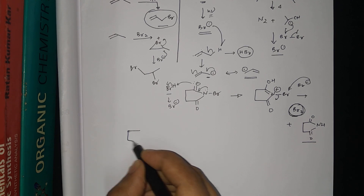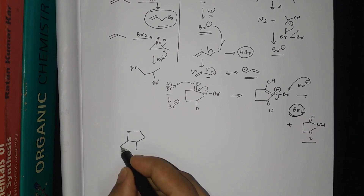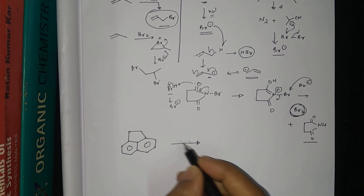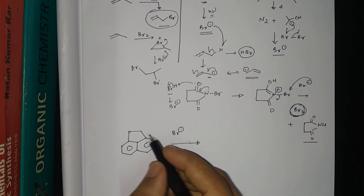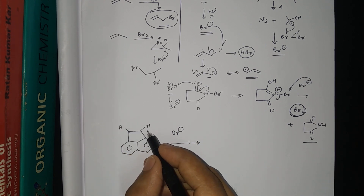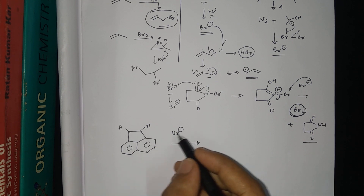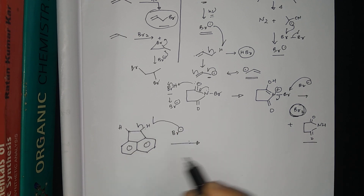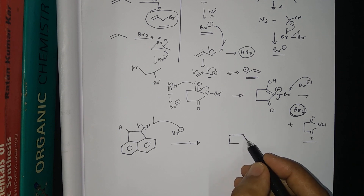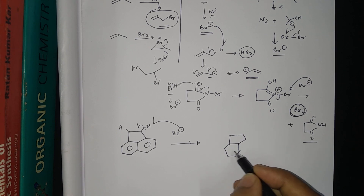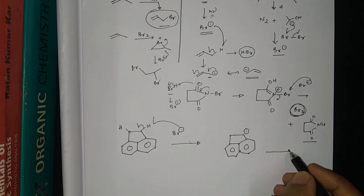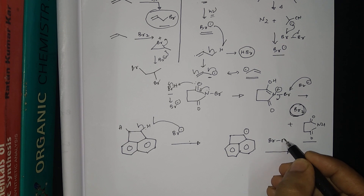Now coming to today's specific example. The bromine radical being generated can abstract a proton from the allylic or benzylic position, since NBS reacts in that way. So a radical will form at the benzylic position, and then the Br2 molecule released from NBS can react to give one more Br•.